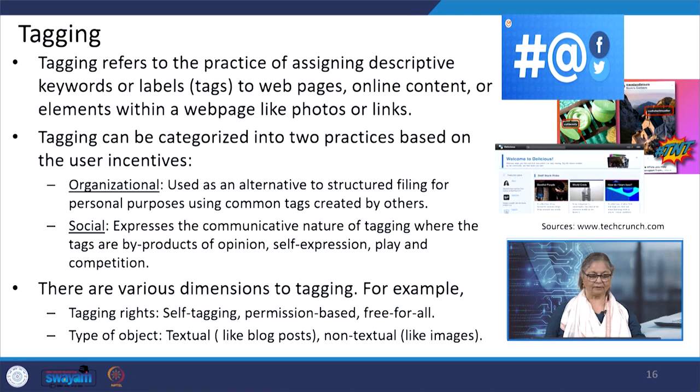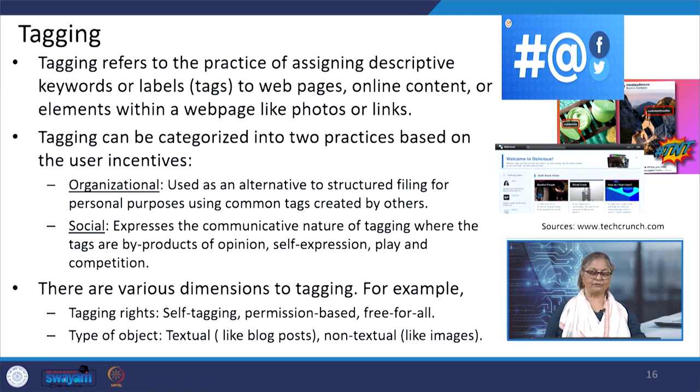There are various dimensions to tagging — for example, tagging rights can be permission-based, free for all, or self-tagging. The types of objects can be either textual or non-textual. Other dimensions include tagging support, which decides who can view the tags associated with a resource, and type of connectivity — whether to link resources or to connect socially. The pictures show how popular social media networks like Facebook and Twitter use hashtags and the at-sign to tag users and keywords. Social bookmarking sites like Delicious also use tagging.